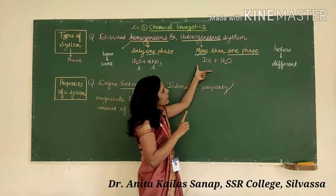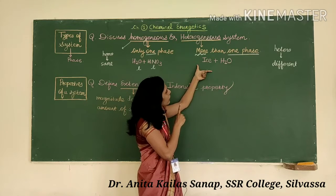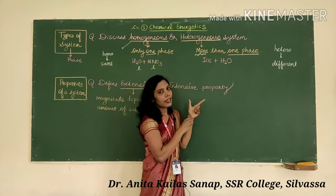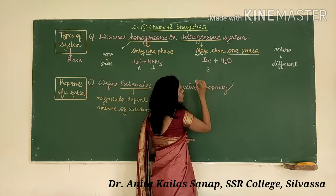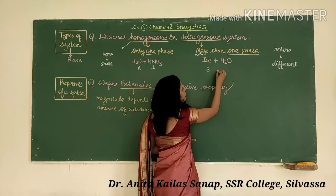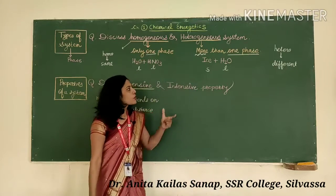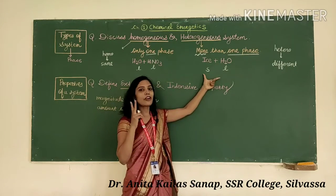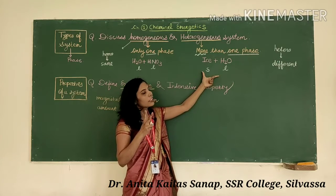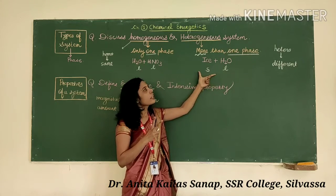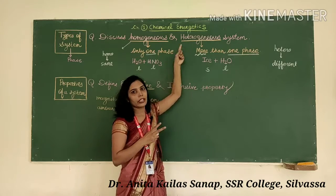For an example of a heterogeneous system, consider ice and water. Ice is present in the solid form, while water is in the liquid form. So solid plus liquid — here there is the presence of two phases. Since it is having two phases, it is called a heterogeneous system.